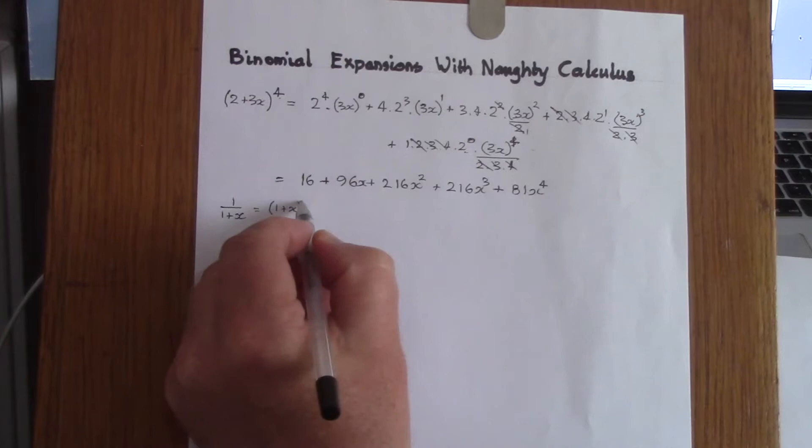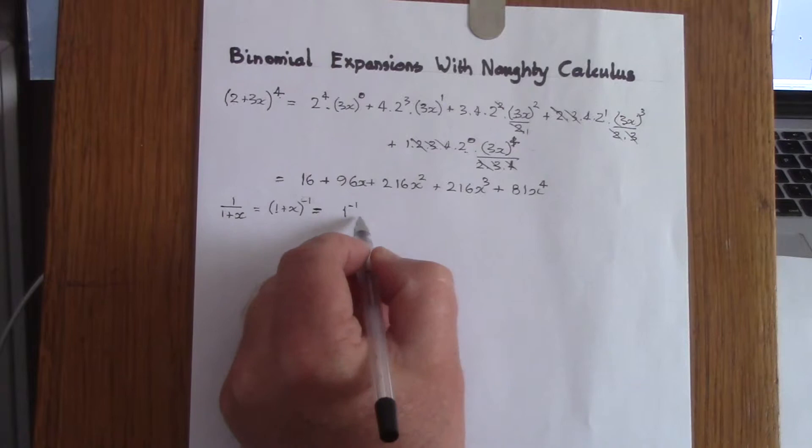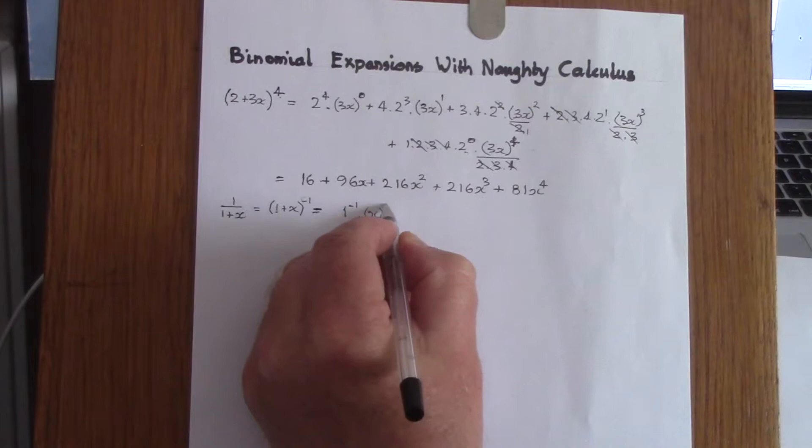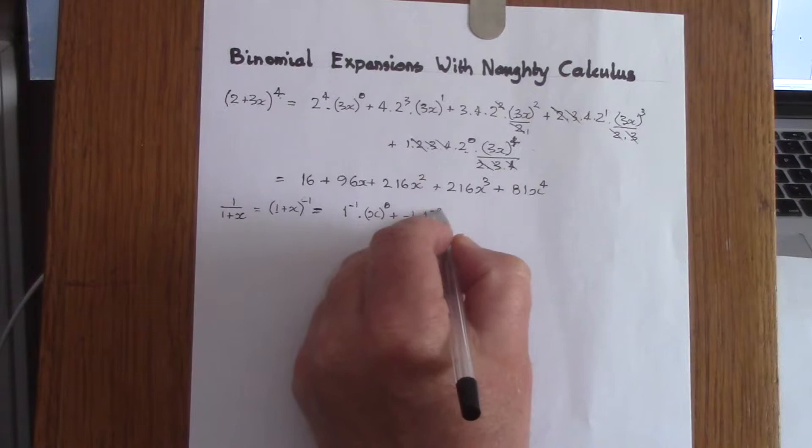It's exactly the same method: we set down the first term to this power multiplied by the second term to the power of 0, and we differentiate the first and integrate the second. Differentiating gives minus 1 times 1 to the power of minus 2, and integrating here gives x to the power of 1.